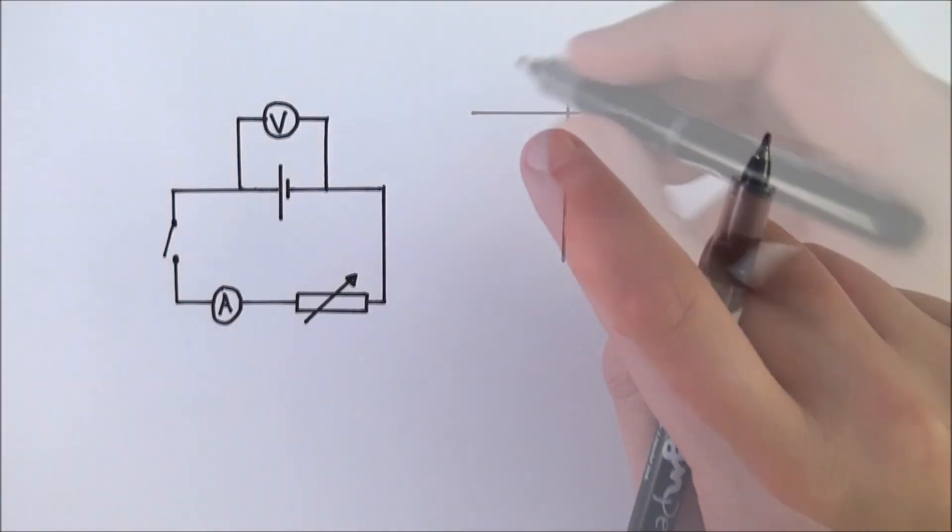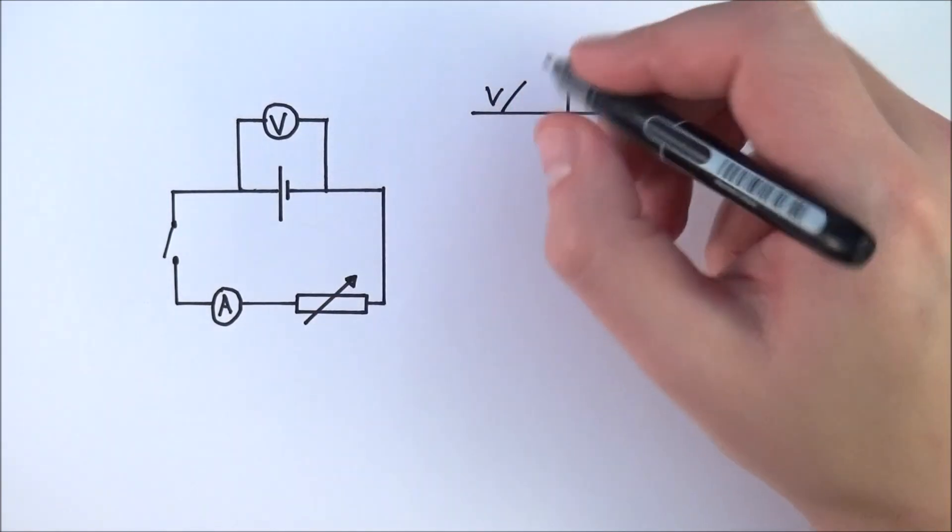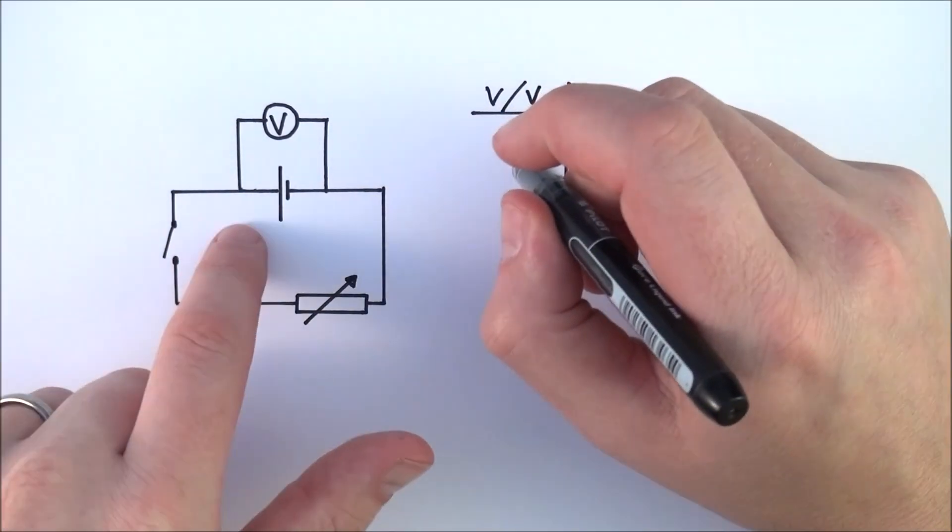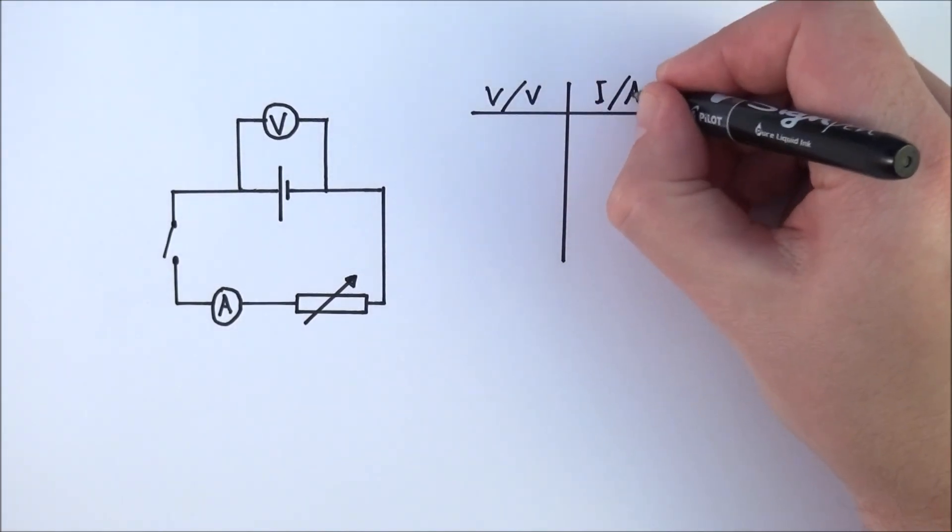So the results that you're going to take should look a bit like this. You're measuring the potential difference across that thing there, which is called the terminal PD because it's the potential difference of the battery terminals, and we also have our current measured in amps.